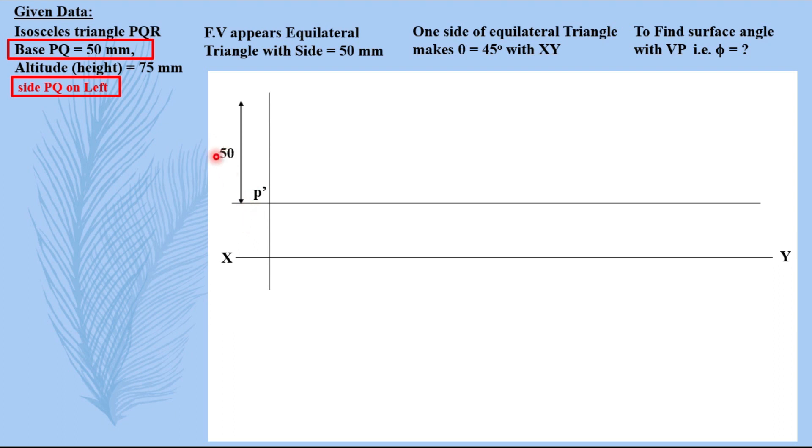You can assume this distance, as per my suggestion you can take it at least 30 mm. So this is 50 mm size we are taking, this is our base, then you have to name it P dash Q dash. From the middle take length that is equals to altitude 75 mm, name it R dash, join it. You completed the first true shape.